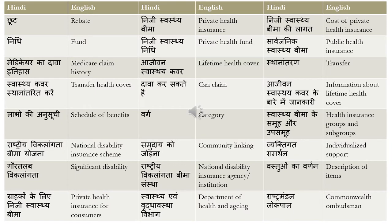'Varg' means category; it can also be translated as 'shreni'. 'Swasthya bima ke samuha or upsamu' means health insurance groups and subgroups — 'samu' is group and 'upsamu' is subgroup. 'Rastriya viklangta bima yojna' means National Disability Insurance Scheme. 'Samudai ko jodna' means community linking. 'Vaktigat samarthan' means individualized support. 'Gaur talav vaktigat' means significant disability. 'Rastriya vaktigat nidhi ma sansta' means National Disability Insurance institution or agency.